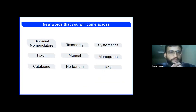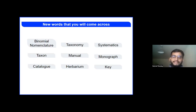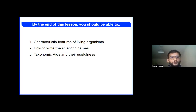Let us come back to the chapter — the Living World. Some new words you will come across include binomial nomenclature, taxonomy, systematics, flora, manual, monograph, catalog, herbarium, and key. From this chapter, at least one question comes in the NEET exam — most probably from herbarium, key, and monograph topics, but this is a pretty easy chapter, so scoring four marks is not a big deal. By the end of this session you should know the characteristic features of living organisms, how to write scientific names properly, and about taxonomic aids and their usefulness.